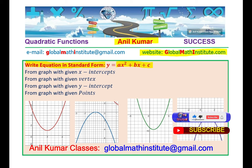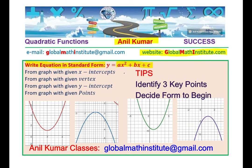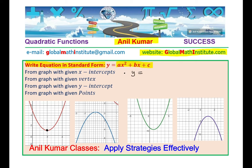A few things to remember: when you write an equation of a parabola, you first have to identify the critical points. The most critical point is the vertex itself. If you can read it clearly, that is the best point to begin with, and you can start with the vertex form: y equals a times (x minus p) squared plus q.